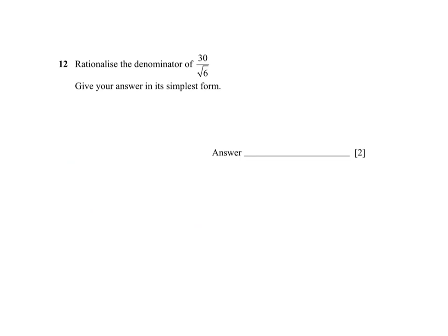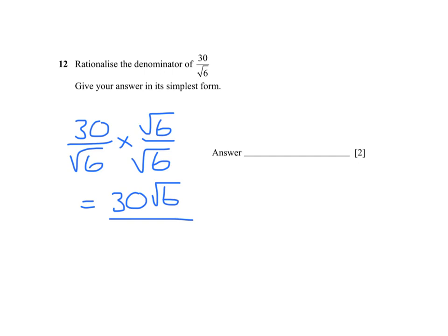To rationalize the denominator of 30 over root 6, we multiply the numerator and the denominator by the original denominator. So we end up with 30 times root 6 over root 6 times root 6. And as I showed in the previous slide, that's the square root of 36, which is 6.